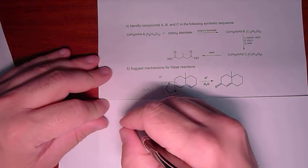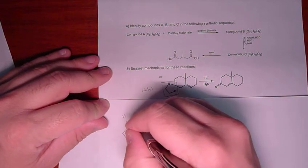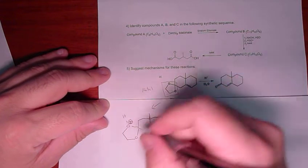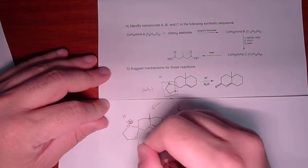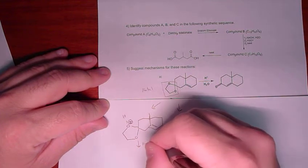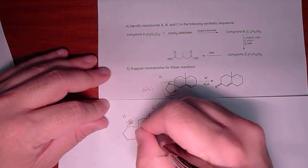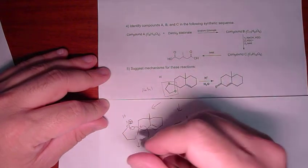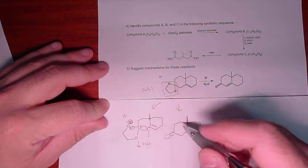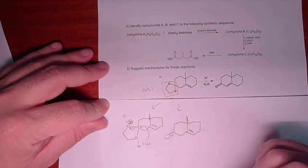The first step is going to be protonation of this oxygen and then subsequent addition of water there, and then you recycle back through that to eventually lead to the ketone.